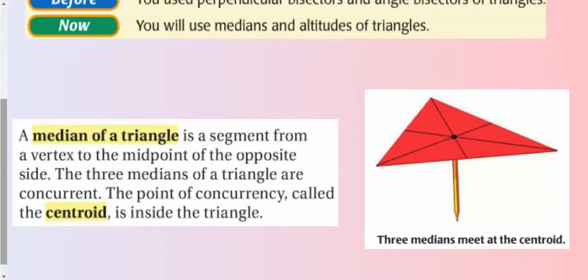So a median of a triangle is a segment from the vertex to the midpoint on the opposite side. The three medians of a triangle are concurrent. So it's another point of concurrency. We've been talking about those. This is our third one now. The point of concurrency is called the centroid. It is always inside the triangle.